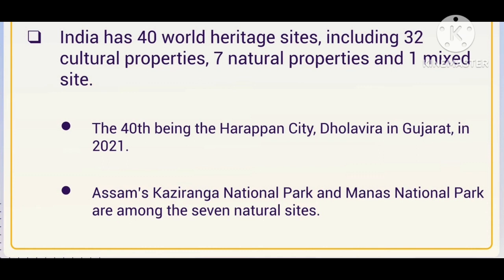The 40th and newest World Heritage Site is the Harappan city in Gujarat, added in 2021. Among the 7 natural heritage sites, important ones include Manas National Park and Kaziranga National Park. These are significant on the basis of their species diversity. Questions on these come every year, so you should have information about them.